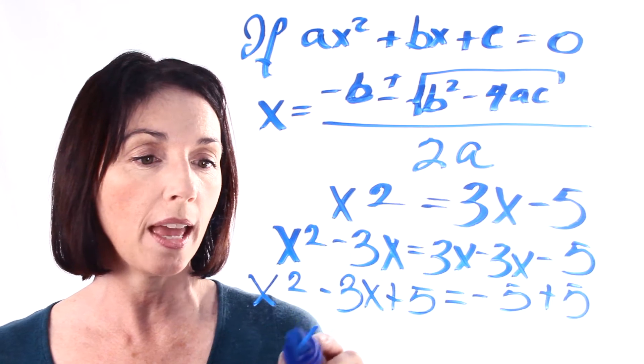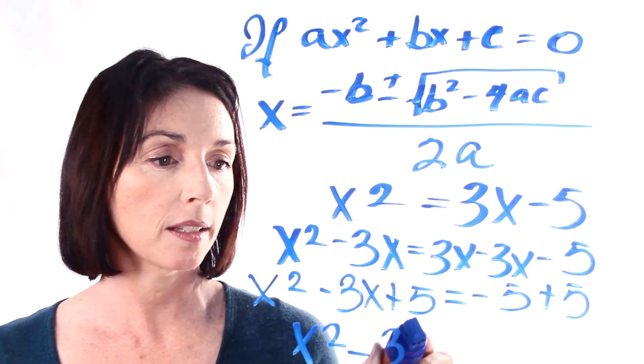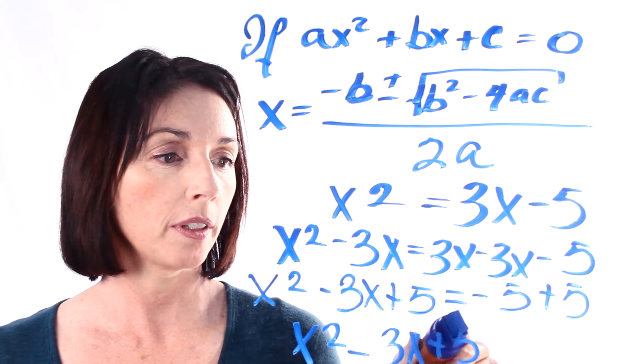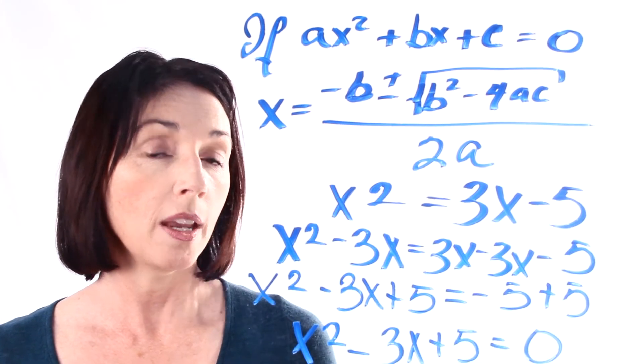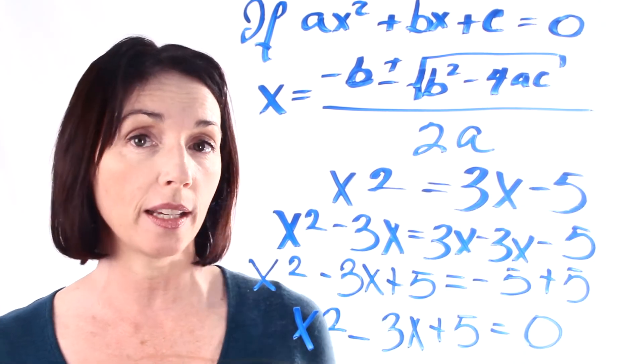So we end up with x squared minus 3x plus 5 equals zero. Now we have the right form to satisfy the condition.